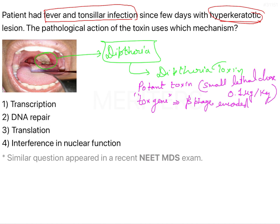The production of the toxin is regulated by iron levels. When the iron level is less than or equal to 0.1 milligram per liter, production of diphtheria toxin begins and keeps increasing.